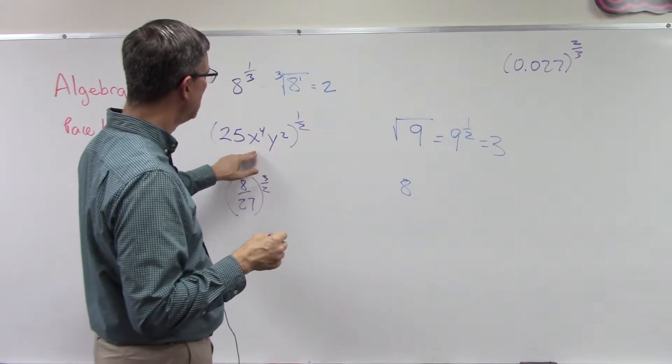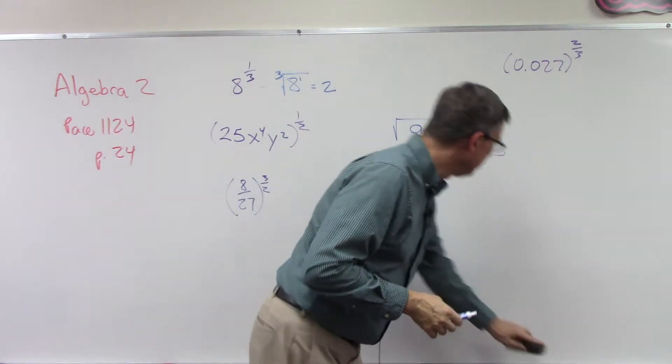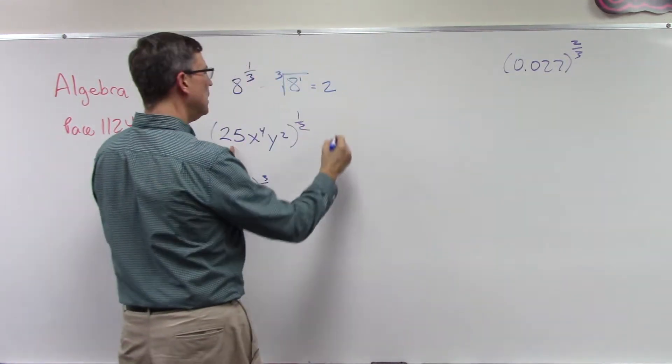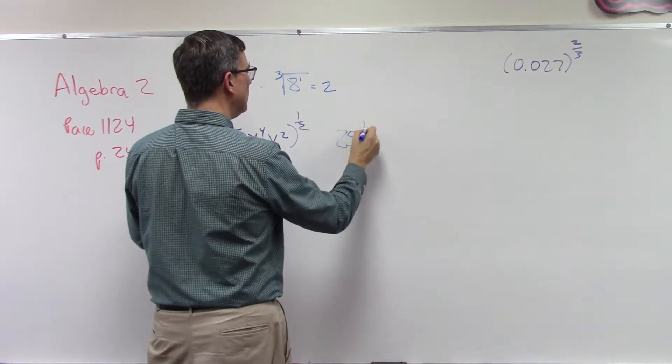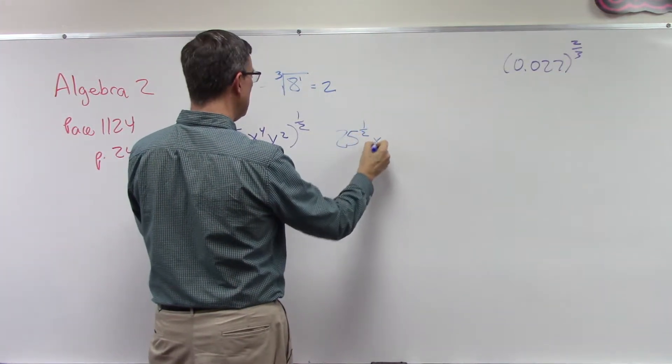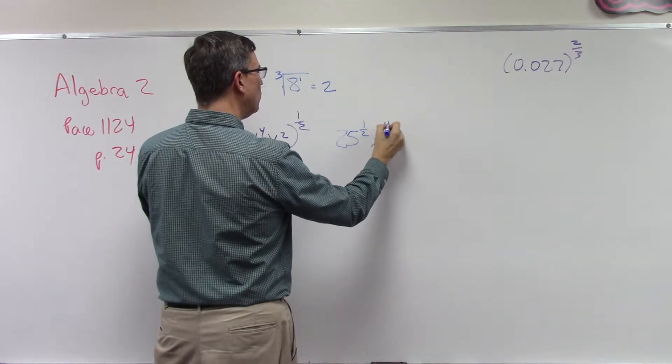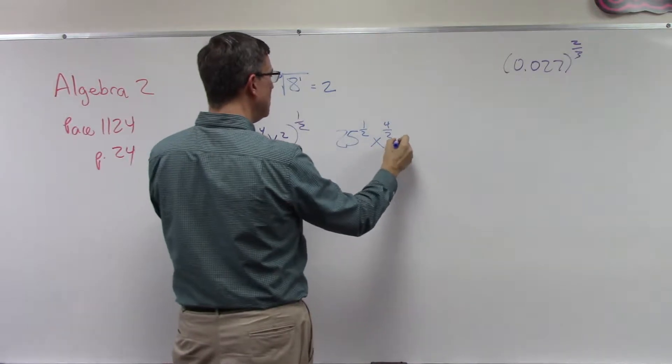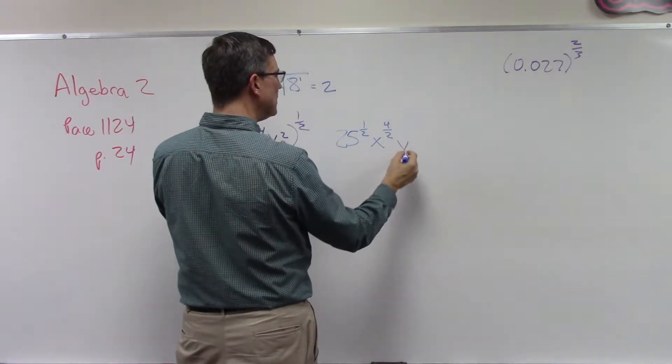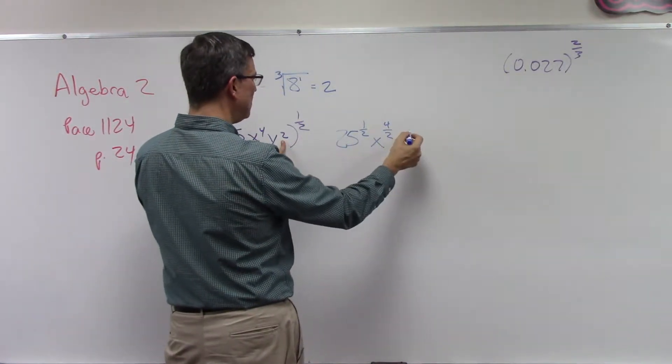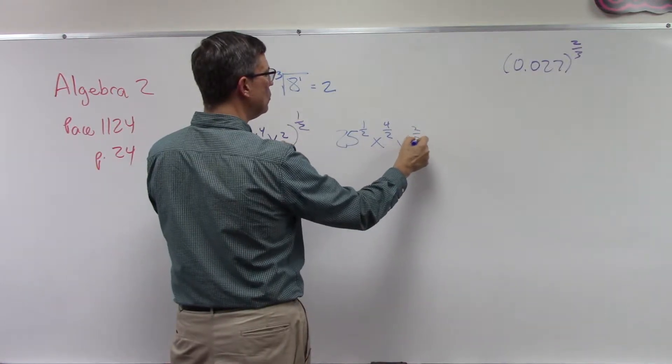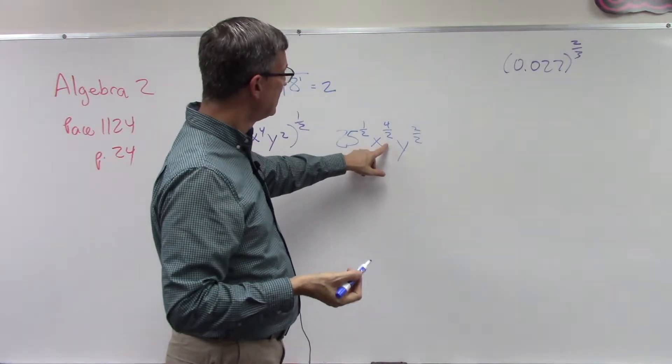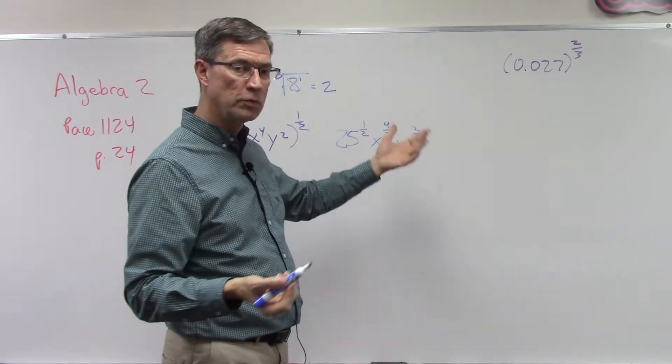Let's take a look at problem 25. Go ahead and write the 1/2 exponent. x to the 4, we'll put that times 1/2, so 4 times 1/2 is 4 over 2. Then y to the second multiplied times 1/2 would be to the 2 over 2 power. Now you just have to reduce it. This is easy: 4 over 2 just reduces to 2.